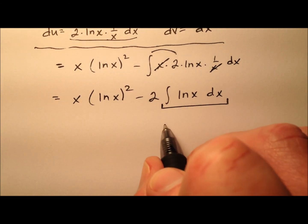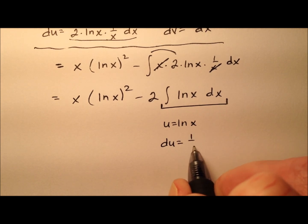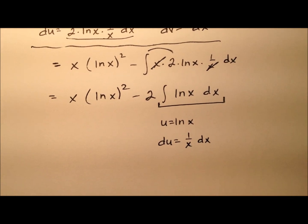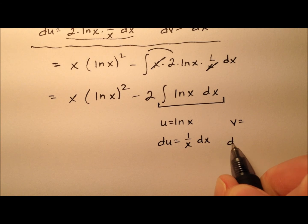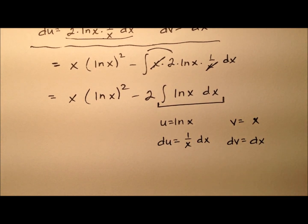We're going to do integration by parts again. So u will be the ln of x. So du will be 1 over x dx. And the dv will just be the dx. So v is x when I integrate both sides.